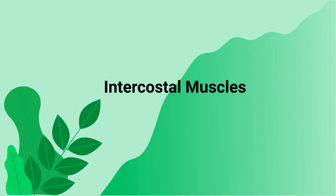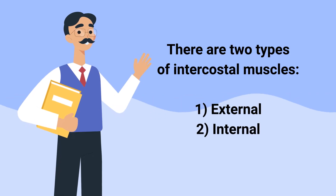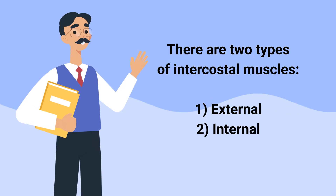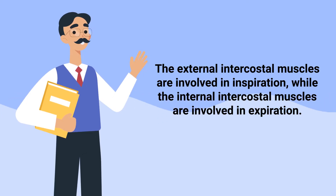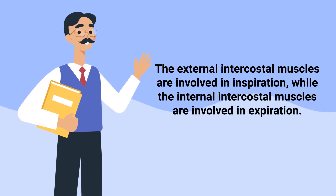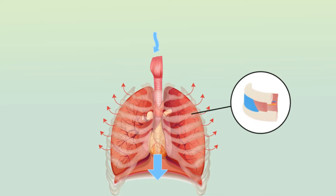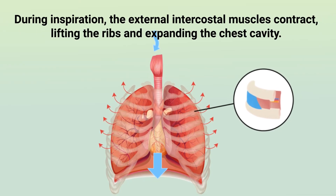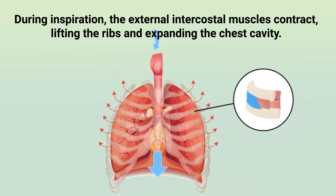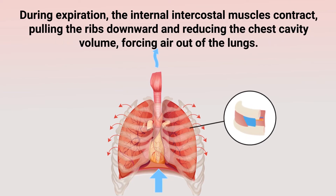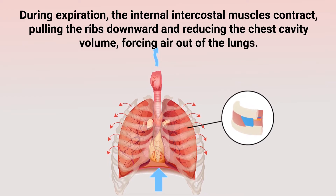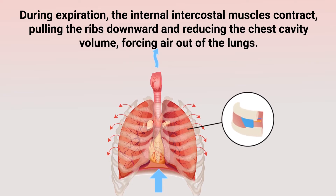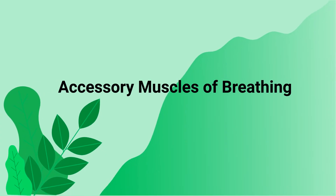Then there are the intercostal muscles, which are a group of muscles located between the ribs. There are two types: external and internal. The external intercostal muscles are involved in inspiration, while the internal intercostal muscles are involved in expiration. During inspiration, the external intercostal muscles contract, lifting the ribs and expanding the chest cavity. During expiration, the internal intercostal muscles contract, pulling the ribs downward and reducing the chest cavity volume, forcing air out of the lungs. Then there are the accessory muscles of breathing.